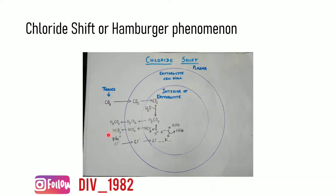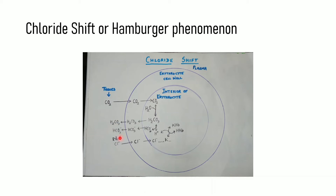The bicarbonate reaches the plasma where sodium ions are free to accept them, so sodium and bicarbonate combine forming sodium bicarbonate — this is how most of the CO2 is transported in plasma. Earlier, before the entry of chloride ions, potassium ions were in close combination with hemoglobin and also a certain amount with bicarbonate. But on entry of CO2, potassium dissociated giving way for hydrohemoglobin.